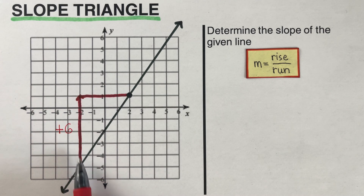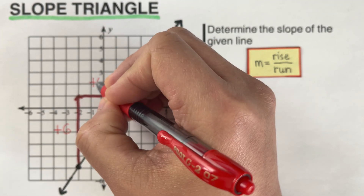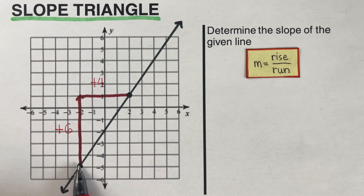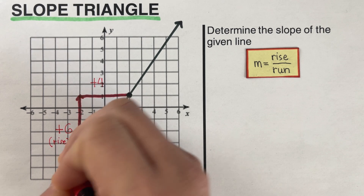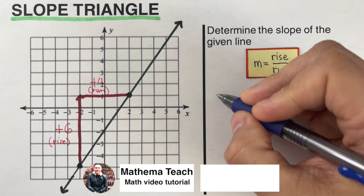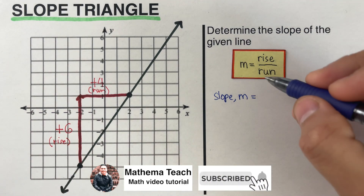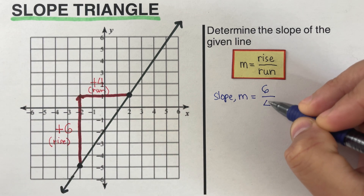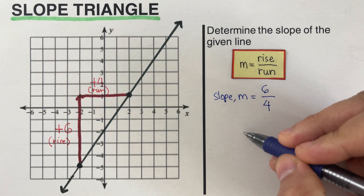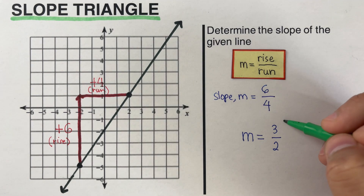The rise is positive six because I went up, and then I go to the right: one, two, three, four steps — positive because I went to the right. So that's positive six over positive four. That's the rise and this is the run. So our slope M is equal to six over four. I can go ahead and simplify this — both six and four are divisible by two. So M is actually three halves, and this is the slope of this line.